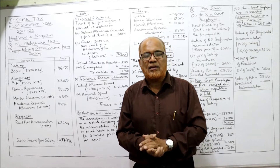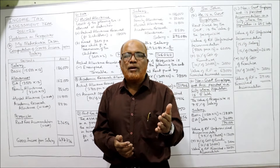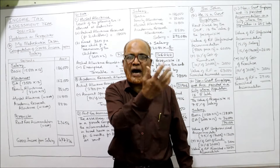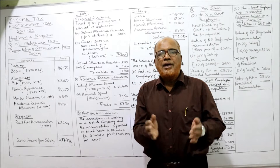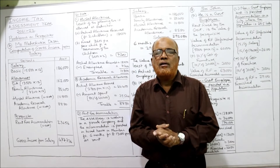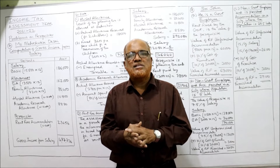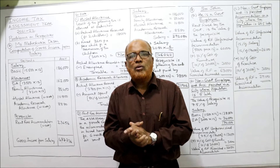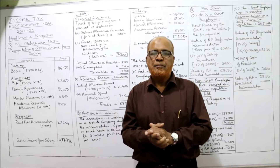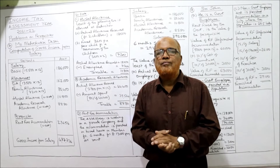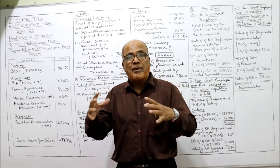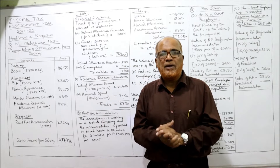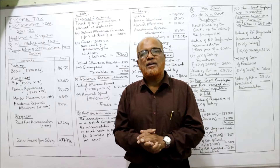For a government employee, the rent fixed by the government is the value of the perquisite — no calculation needed. For a non-government employee, we check whether the accommodation is owned or hired by the employer. If owned, it depends on the population of the city: small town 7.5% of salary, medium town 10% of salary, big town 15% of salary.